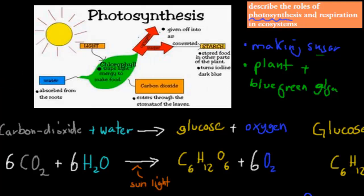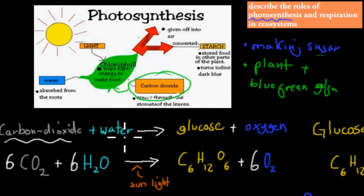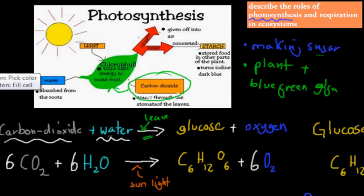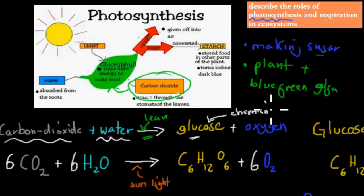What plants do is they use carbon dioxide, which is a gas that comes from the environment — it floats around in the air and goes into a leaf. We also have water, which comes from the roots of the plant. So carbon dioxide and water, inside a leaf, undergo a reaction to produce glucose, which is our chemical energy, and as a byproduct, we also produce oxygen.